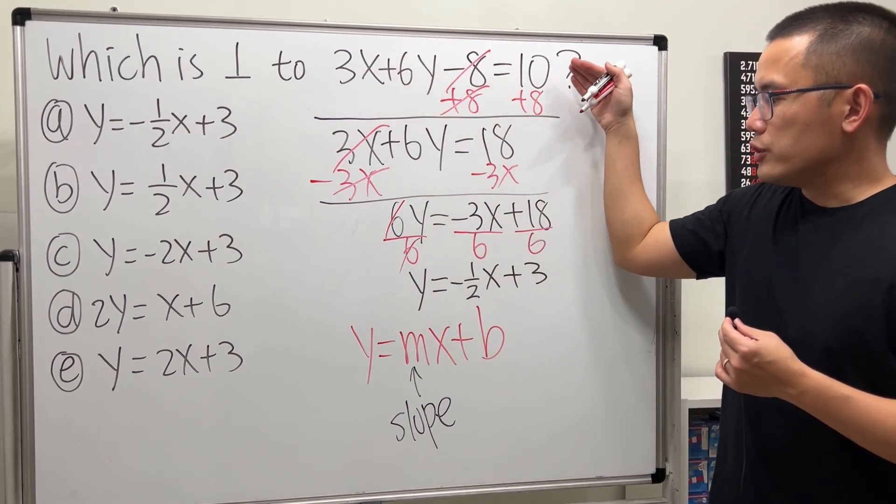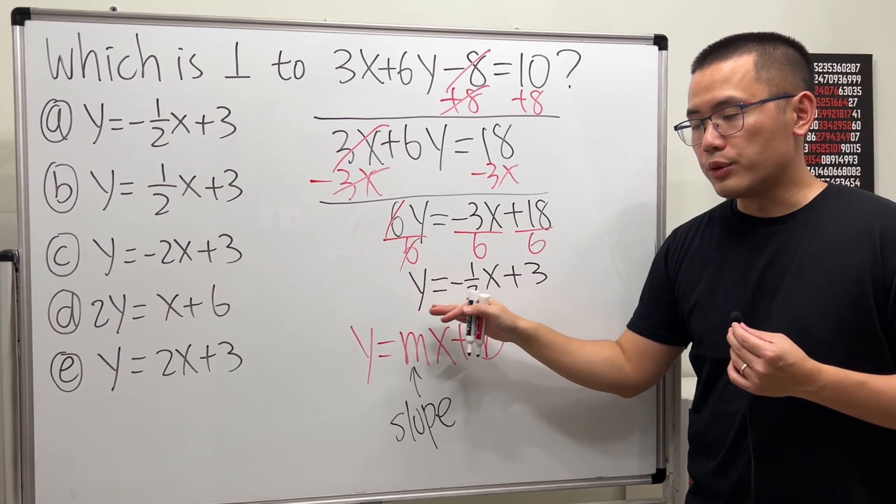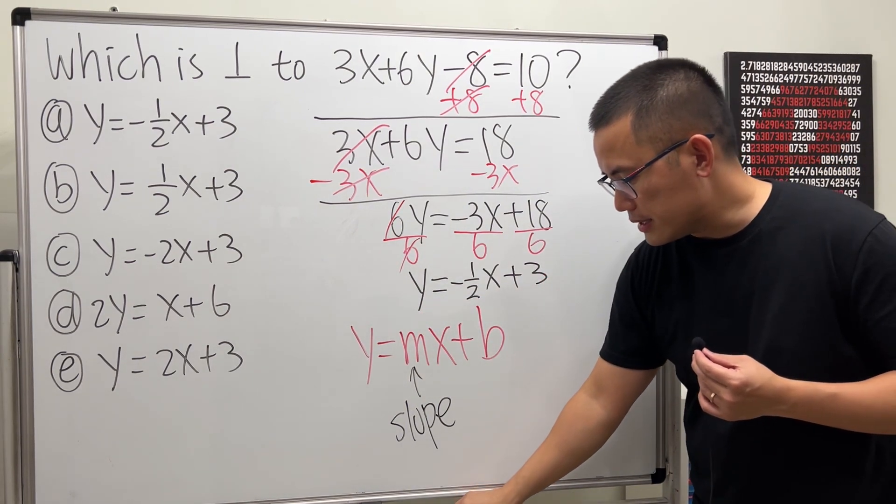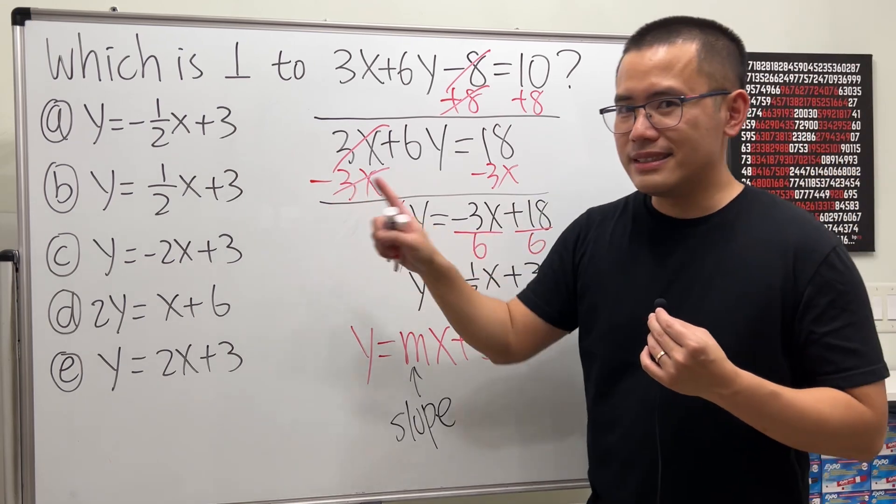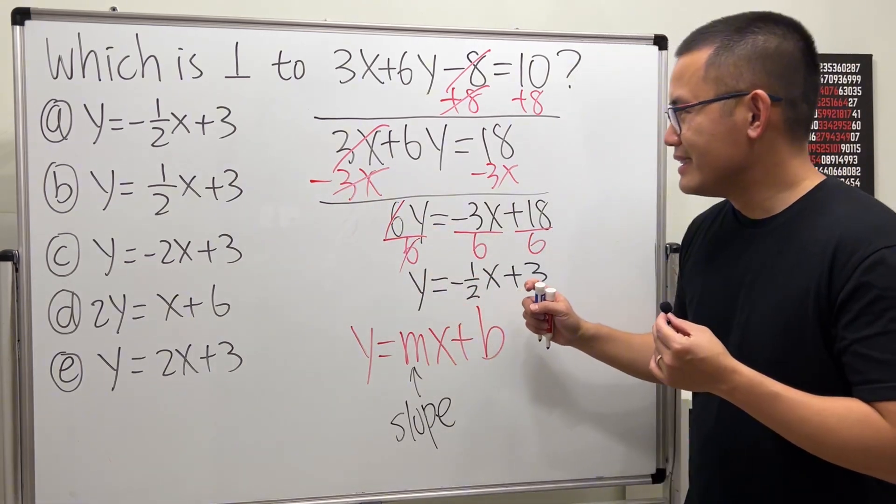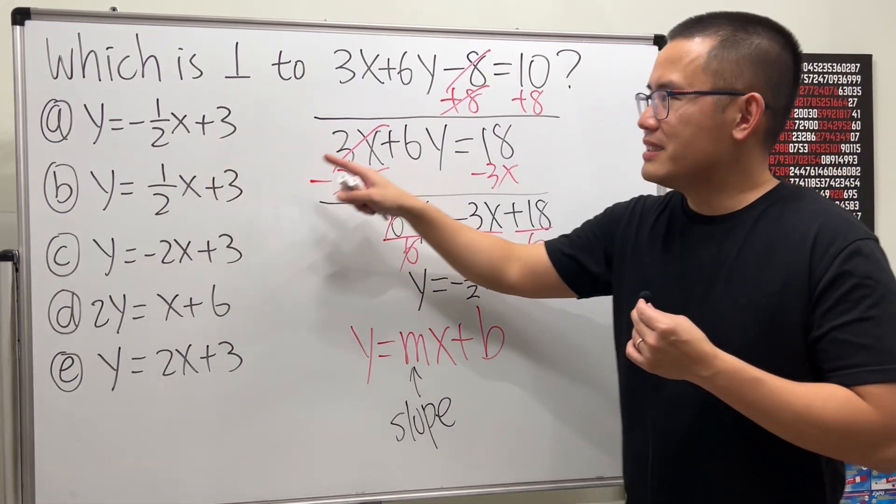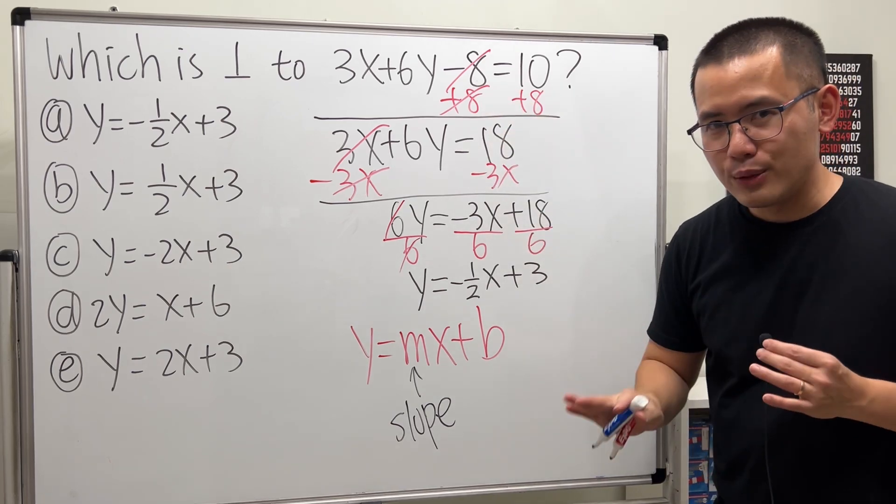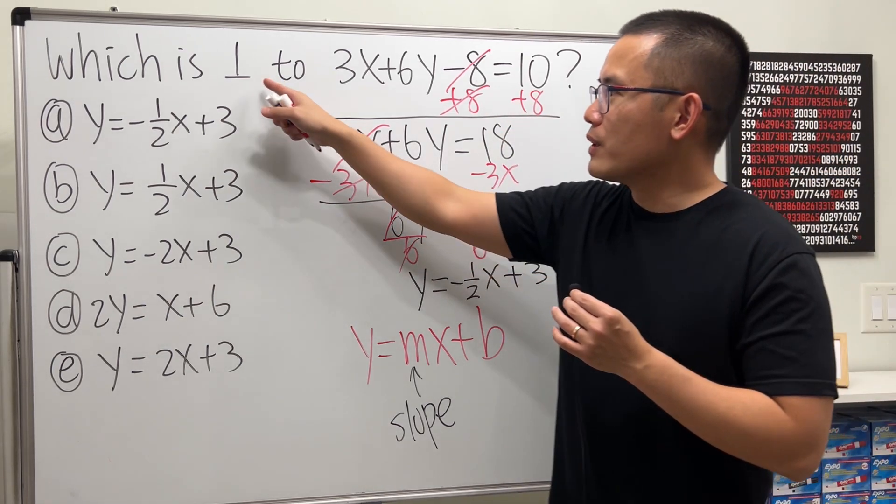So, this equation is equivalent to this equation. And now, you can see that the answer choice is a little bit tricky, because this is the same as the original, and we are not looking for that. We are looking for the perpendicular.